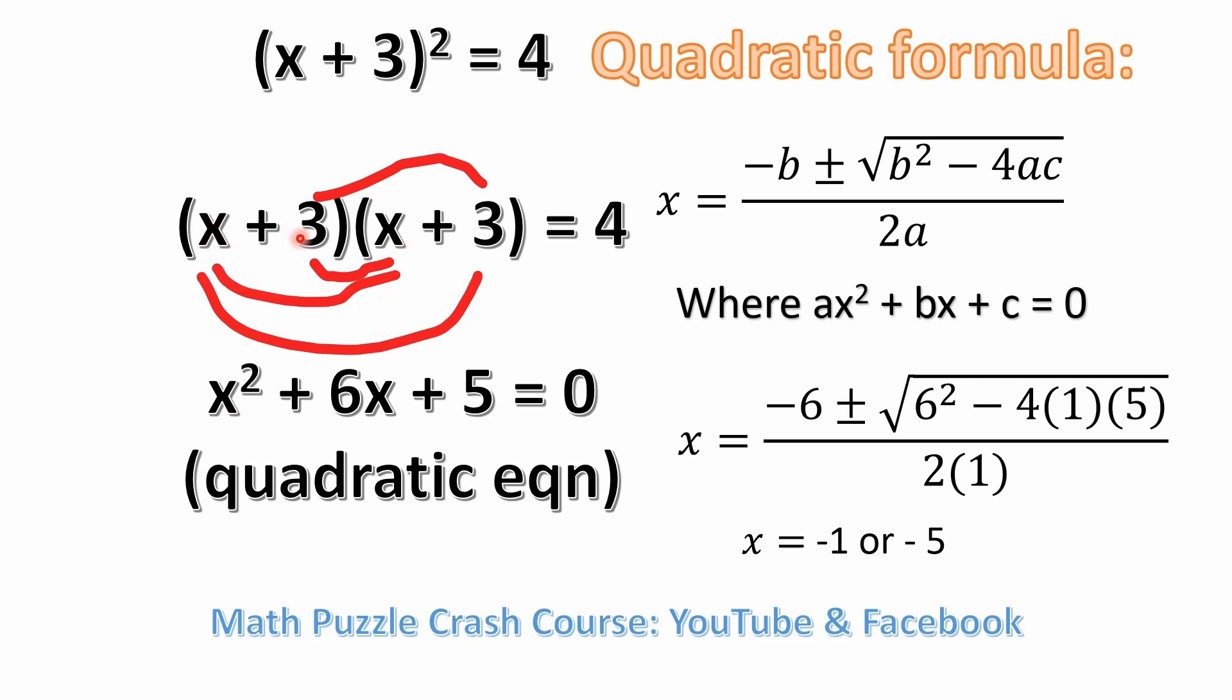x times x, 3x plus x times 3. 3x plus x times 3 gives us 6x. Then we took 3 times 3, which is 9. And like I said before, we subtract 4 from both sides. That gives us 5 here. It gives us 0 on the right side.